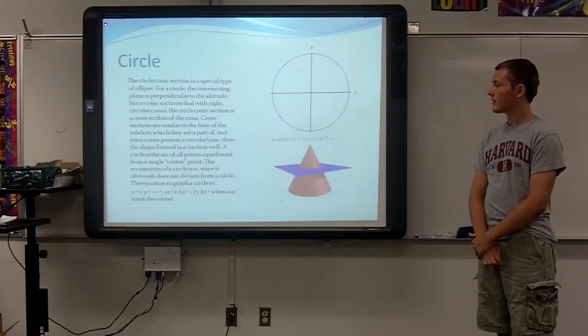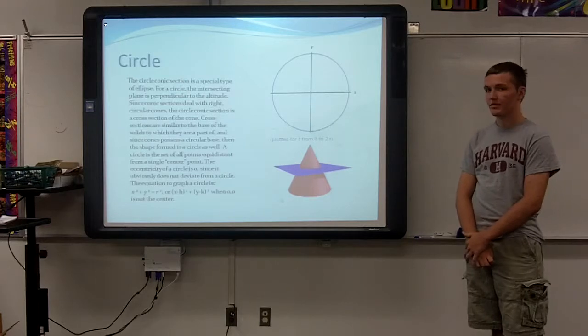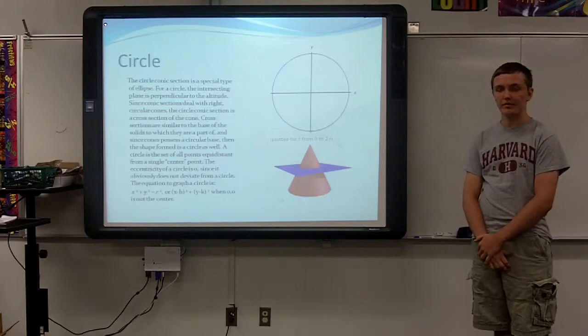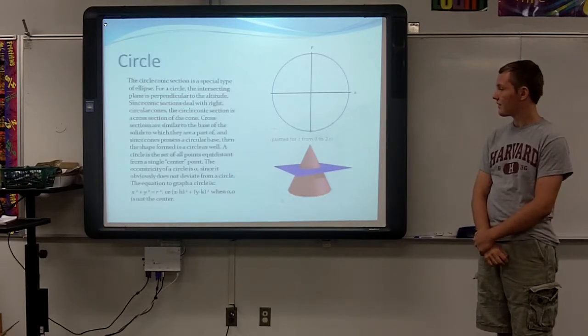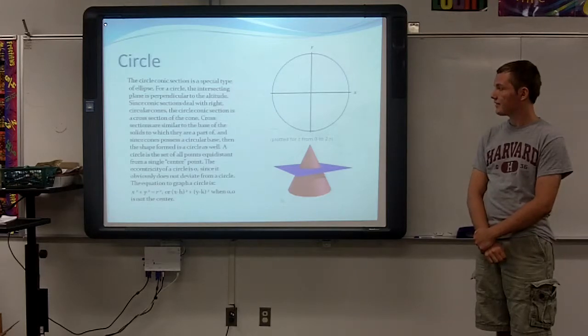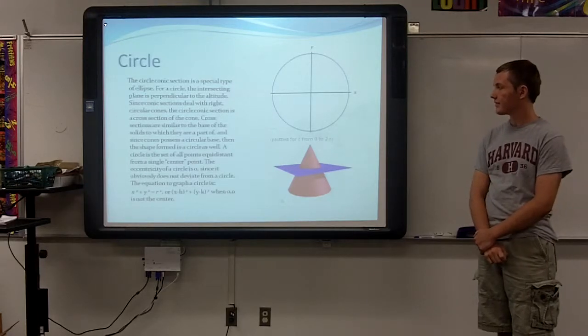Circle. The circle conic section is a special type of ellipse. For a circle, the intersecting plane is perpendicular to the altitude. Since conic sections deal with right circular cones, the circle conic section is a cross section of the cone.